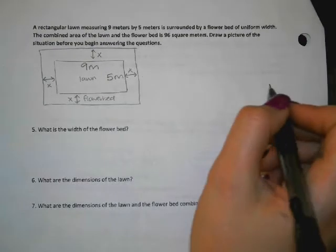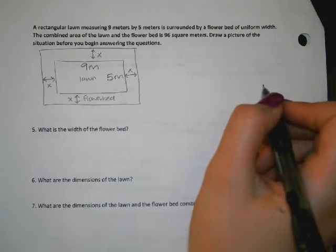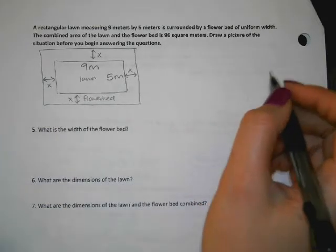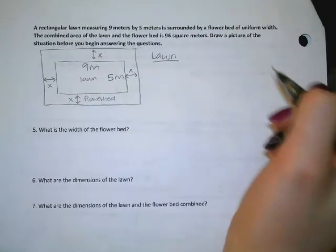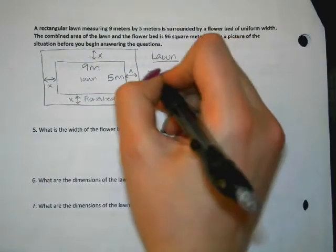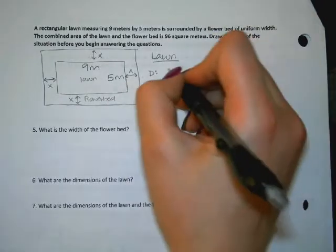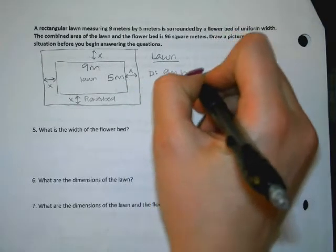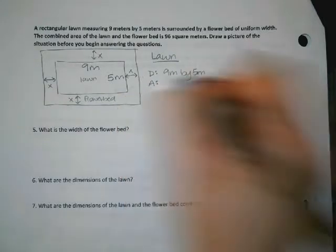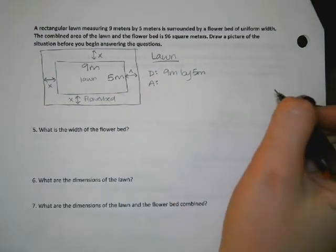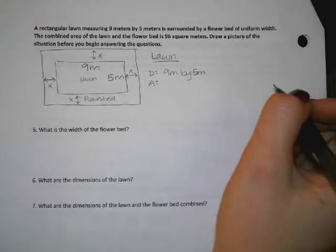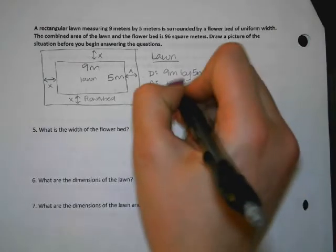So we've got two sets of dimensions happening and two sets of areas happening. The first set has to do with the lawn all by itself. So the dimensions of the lawn all by itself are nine meters by five meters. And what's the area of the lawn all by itself? 45, right? And we get that by doing length times width equals area. So 45 meters squared, that's the area of the lawn.